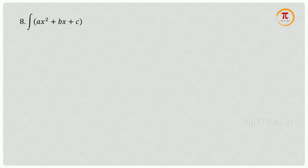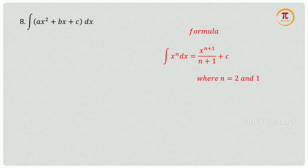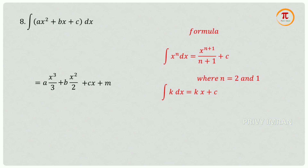Question number 8: integration of ax squared plus bx plus c dx. Using the power formula where n equals 2 and 1, the first two terms give ax cubed divided by 3 plus bx squared divided by 2. Using integration of k dx equals kx plus c, the final answer is ax cubed divided by 3 plus bx squared divided by 2 plus cx plus m, where m is an arbitrary constant.